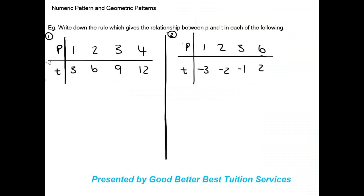Now we're going to be looking at numeric patterns and geometric patterns. Over here we have our numeric pattern. They ask us to write down the rule which gives the relationship between p and t in each of the following. We need to find out what the rule is — remember, the rule is what gives us a relationship between p and t.